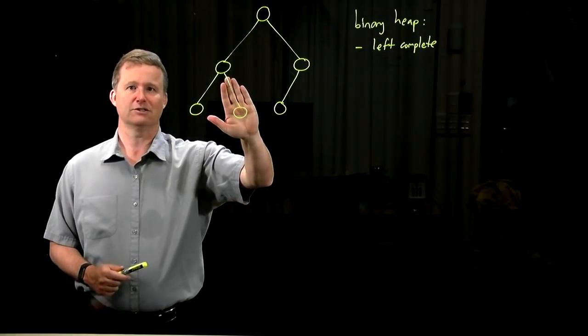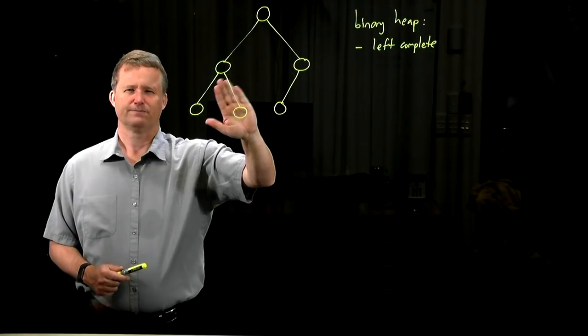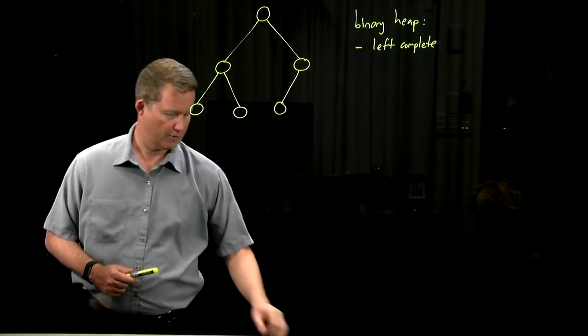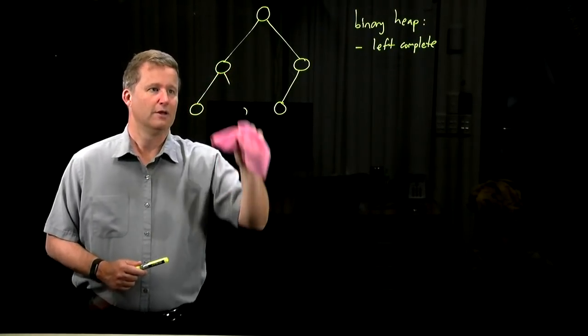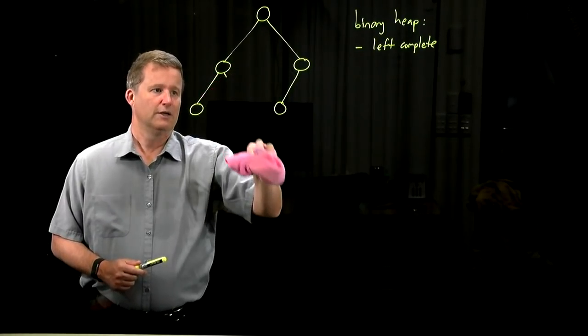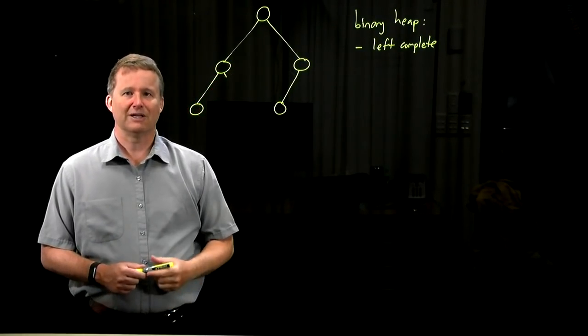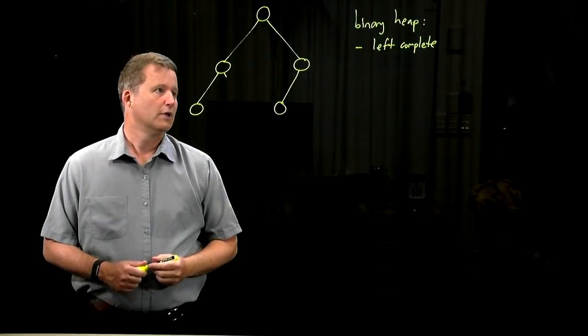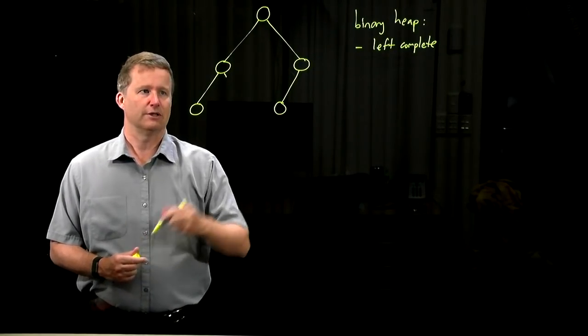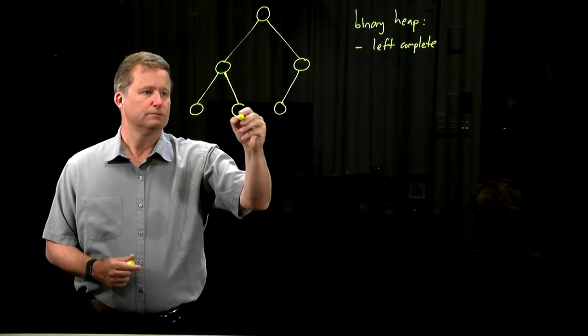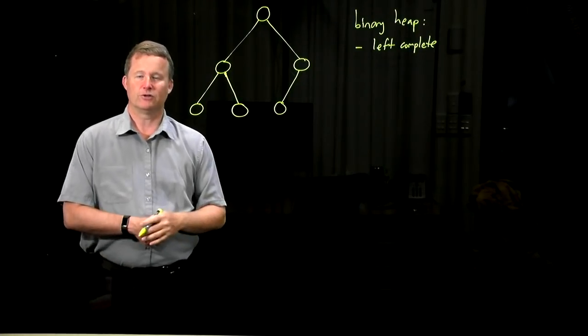But there are no gaps. For example if we deleted this element, there would no longer, if I deleted this element, that would no longer be acceptable as a binary heap. It's not a left complete tree, because there's something missing there. So that's an example of a left complete tree.